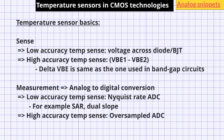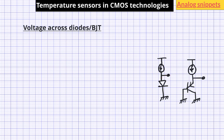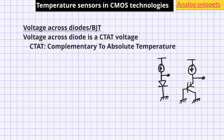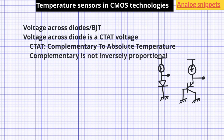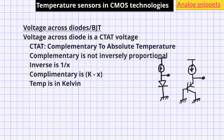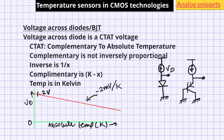Voltage across a diode biased at a constant current has a CTAT characteristic, which stands for complementary to absolute temperature. Keep in mind that complementary is not the same as inversely proportional. While inversely proportional is a 1/x function, the complementary function is a constant minus x. Also note that we are specifically mentioning absolute temperature, which means temperature on the Kelvin scale. If we plot the diode voltage with absolute temperature, at 0 Kelvin this voltage would be about 1.2V, and from there as temperature increases, this voltage reduces with a slope of about minus 2 millivolt per Kelvin. By the time we reach room temperature of 300 Kelvin or 27°C, this voltage is reduced to about 0.6V.